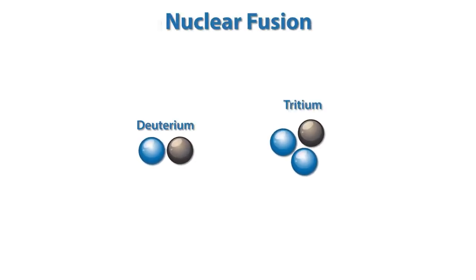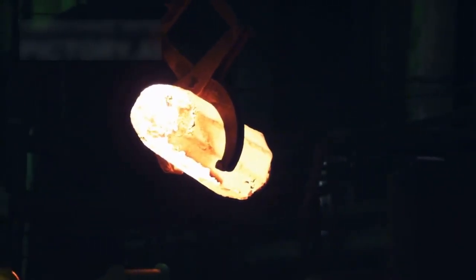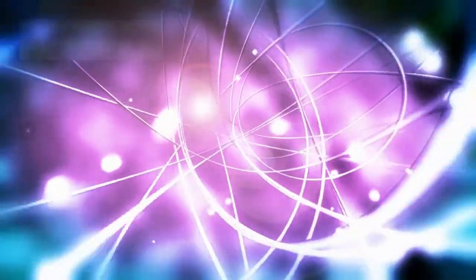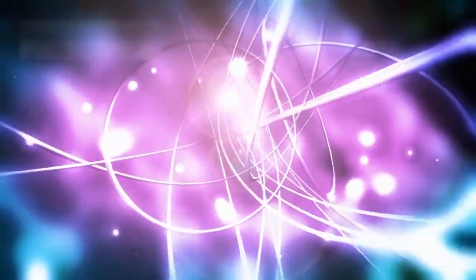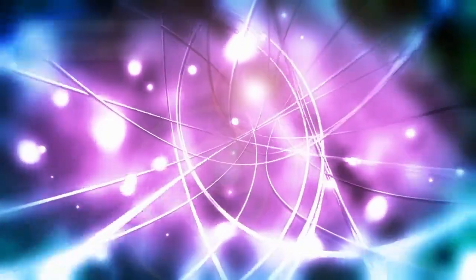At its core, Betelgeuse fuses hydrogen into helium, releasing light and heat. When hydrogen runs out, it starts fusing helium and carbon, eventually creating iron. Iron fusion doesn't release energy, so the star collapses and eventually explodes as a supernova. This type of explosion is one of the most powerful events in the universe.